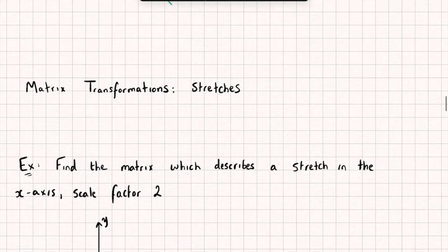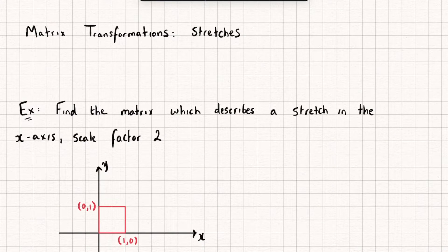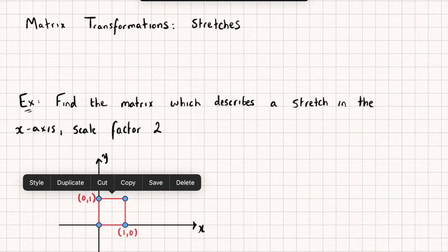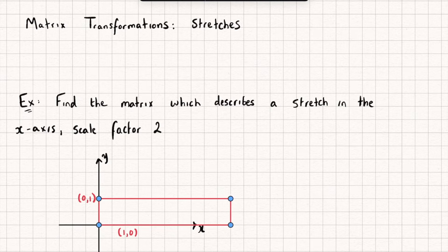So let's look at this first example here where we're looking to find a matrix which describes a stretch in the x axis with a scale factor of 2. So what this is going to do is stretch it solely parallel to the x axis and leave the y axis unchanged. So we could say that it's an invariant axis. So it's going to be stretched so that it's going to become a shape stretched solely in the x axis like this.